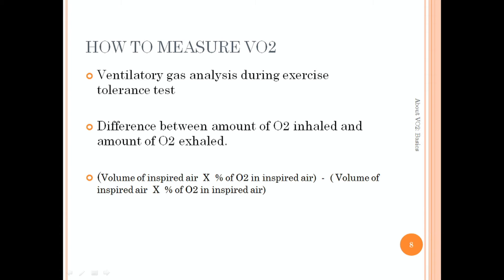So practically VO2 is measured with the help of ventilatory gas analysis during the exercise tolerance test. During the exercise tolerance test, the difference between the amount of oxygen inhaled and the amount of oxygen exhaled is calculated. It is calculated with the formula: volume of inspired air multiplied by the percent of oxygen in the inspired air, minus the volume of expired air multiplied by the percent of oxygen in the expired air.